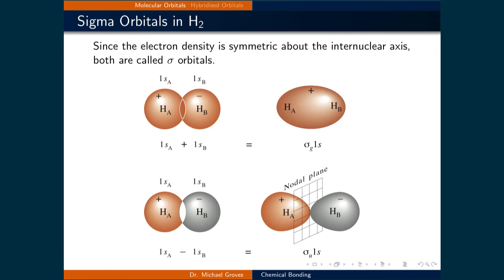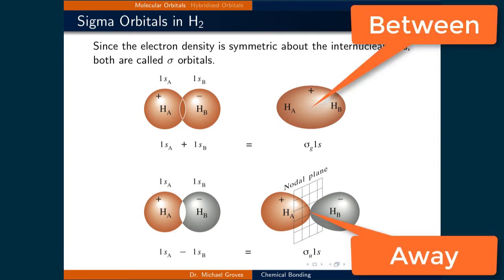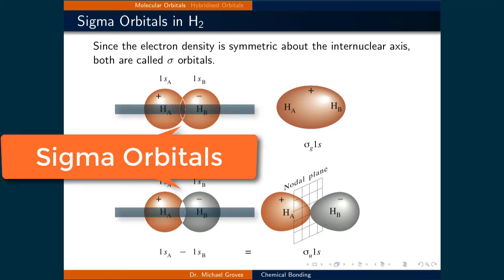Here are two illustrations that demonstrate the concentration of electron density between and away from the center of the two nuclei, depending on if the orbital is bonding or antibonding due to constructive or destructive interference. Since the electron density is symmetric about the internuclear axis, meaning along the axis that goes through the two nuclei, both are called sigma orbitals.